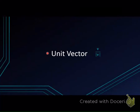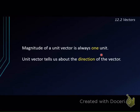When we learn about vectors, there is one special vector we must always learn, called the unit vector. If we have a vector v, the unit vector is always written as v over the magnitude of v. A unit vector is a vector with the magnitude of 1, so the magnitude of a unit vector is always one unit. We need the unit vector because it serves as information that tells us about the direction of the vector.